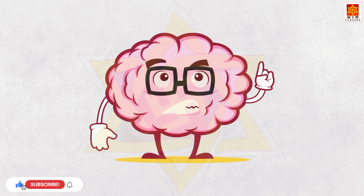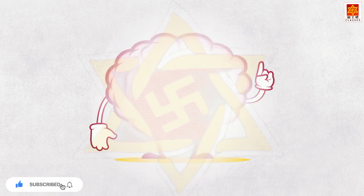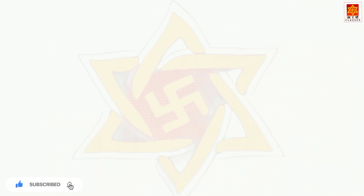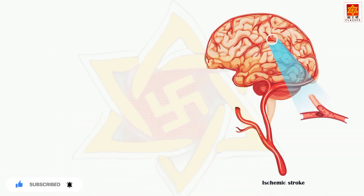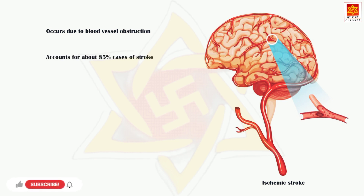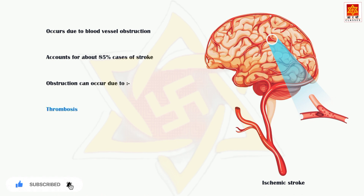Based on the etiology, there are two major types of strokes. Ischemic stroke, which occurs due to blood vessel obstruction, accounts for about 85% of all the cases of stroke. Obstruction can occur due to thrombosis or formation of blood clots in the vasculature, large artery stenosis, and small vessel disease.